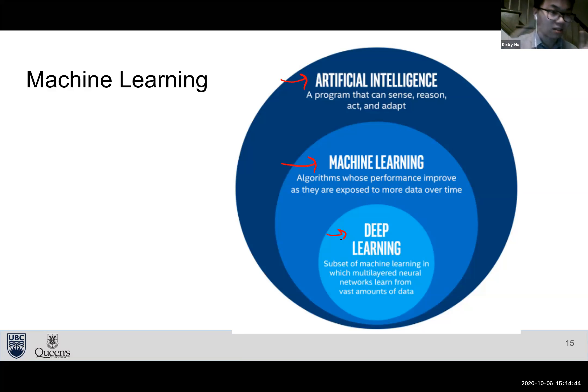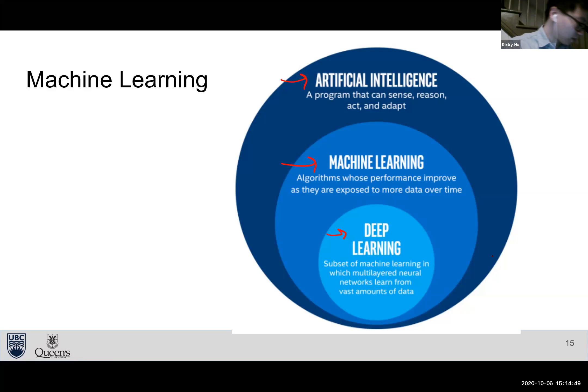Machine learning and deep learning are part of the same general idea — deep learning is just more complex, producing more complex output.